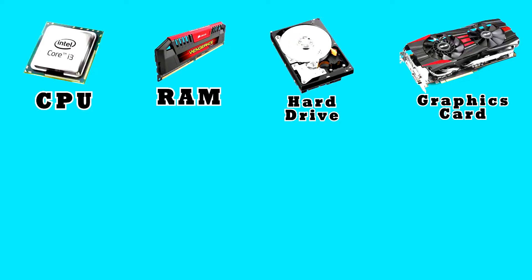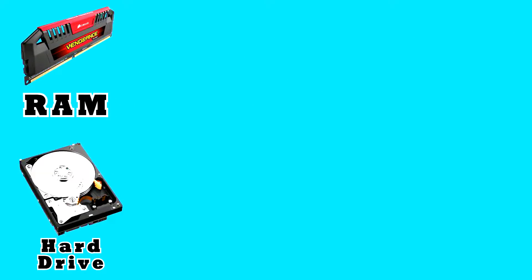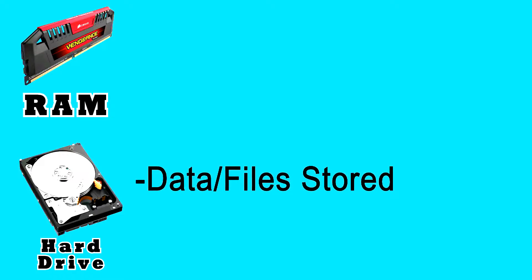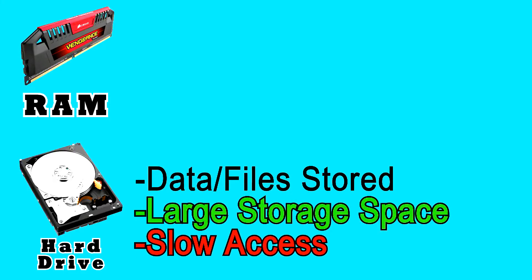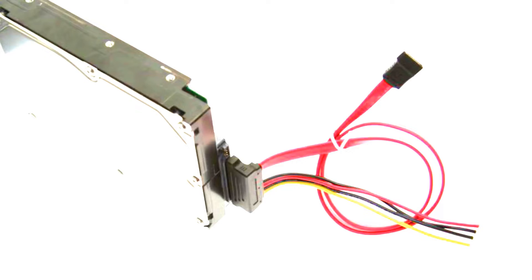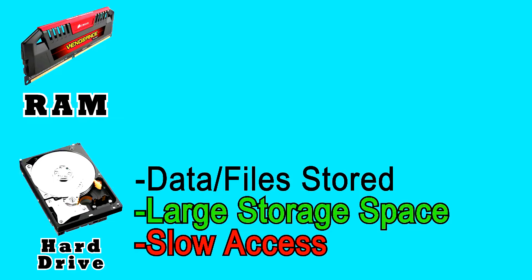Now let's talk about RAM and hard drive at the same time, because they have a very unique relationship, which is probably why people often confuse the two. Your hard drive is where all of your data is stored. When your computer tells you you're running low on space, it's because your hard drive is almost full. All of the data that makes up your videos, pictures, documents, project files, or the 3D worlds that make up a game are stored here. While hard drives can store lots of data, they're relatively slow at accessing that data quickly, because most hard drives are made up of spinning disks.